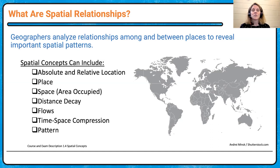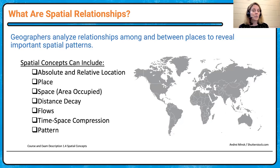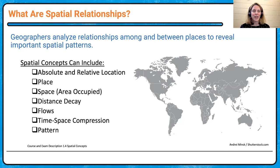We want to analyze relations among and between places and look at how they reveal important spatial patterns. Some concepts we can include: absolute and relative location, place — what is it like there — space and whether it's clustered or dispersed, distance decay and interaction based on where you live, the flows of ideas, goods, and people, time-space compression and technology's influence, and then really diving into those patterns.